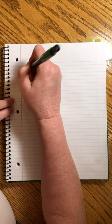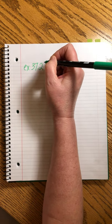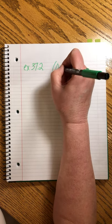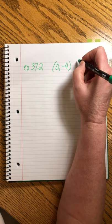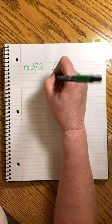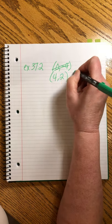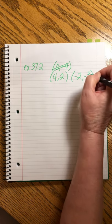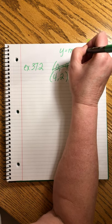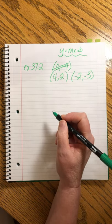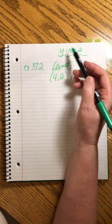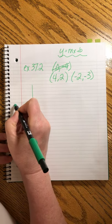Example 37.2. It says find the equation of the line that is equidistant from the points (4,2) and (-2,-3). Write the equation in slope intercept form. So we want to write it like y = mx + b. Let's just graph it. You don't have to graph these normally, but I want you to understand what we're doing.